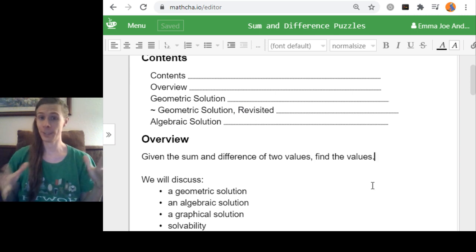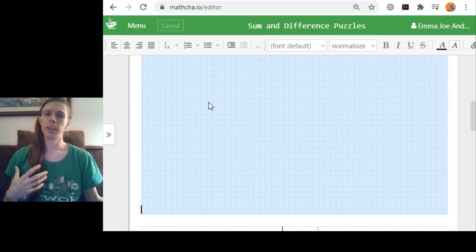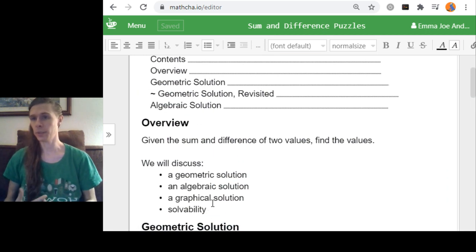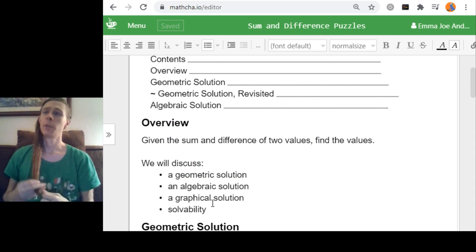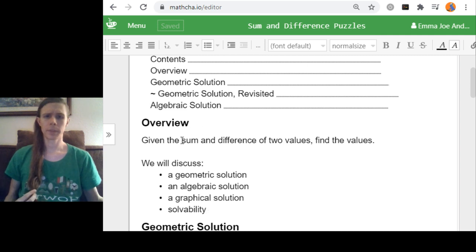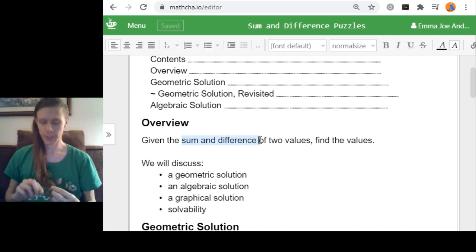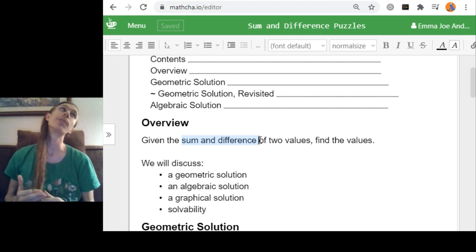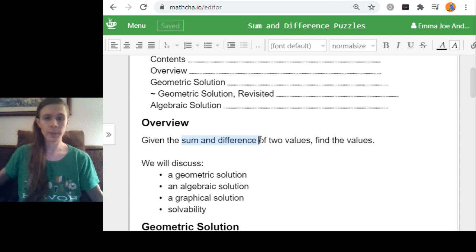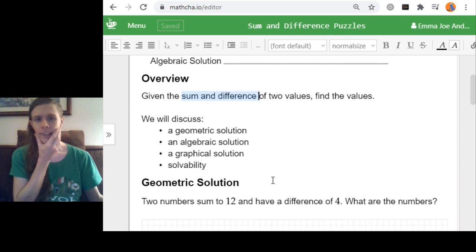But after covering many different ways of solving the problem, I'll want to discuss how they're all the same, or how they're all interrelated, and what the solvability of the problem is in general. Solvability is referring to which sums and differences can you be given for which there even are solutions, or are no solutions, or only have one solution, or two, or what have you. Lots of possibilities to discuss there, but we'll get there when we get there. And solvability is often something best discussed after you've solved specific problems in multiple cases.